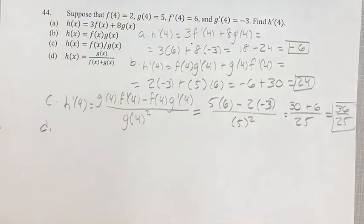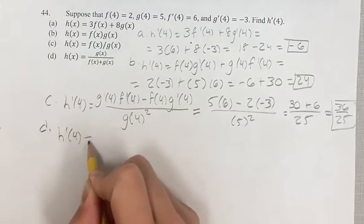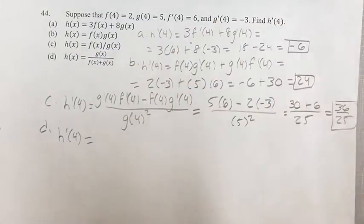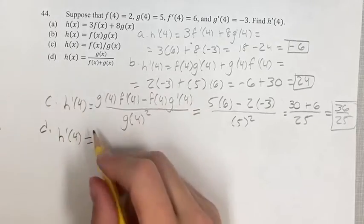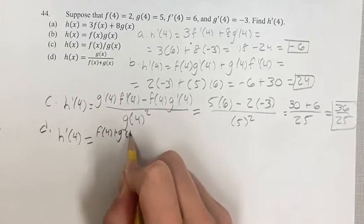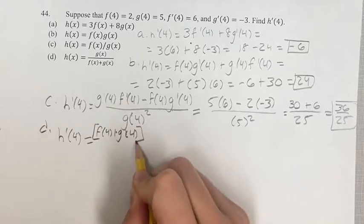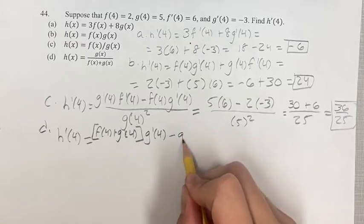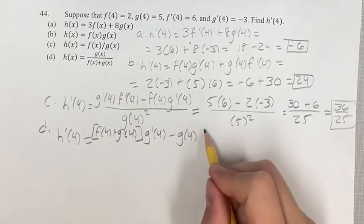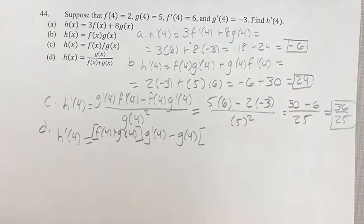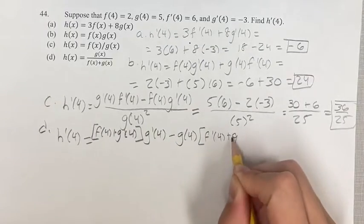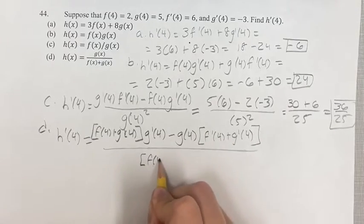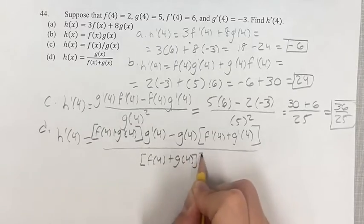Last but certainly not least, we have part d, where we have another fraction — a little bit more complicated this time, but not too bad. When you're adding functions, you don't have to worry about product rules. So we take the denominator, f of 4 plus g of 4, times the derivative of the numerator, minus the numerator times the derivative of the denominator — which is just f prime of 4 plus g prime of 4. This is all over the quantity f of 4 plus g of 4, squared.